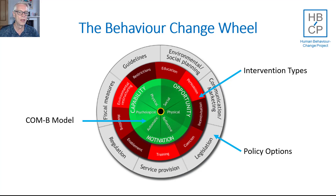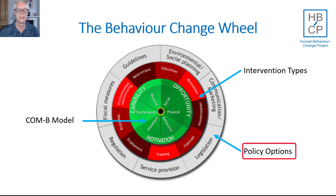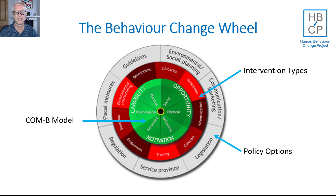While these intervention types describe what you might conceive of as the content of interventions, you have to deliver them in a particular way. On the outside of the Behaviour Change Wheel in grey, we have the various policy options for delivering these interventions. There are seven of these: environmental and social planning, communications and marketing, legislation, providing a service, regulations short of legislation, fiscal measures, and developing guidelines.